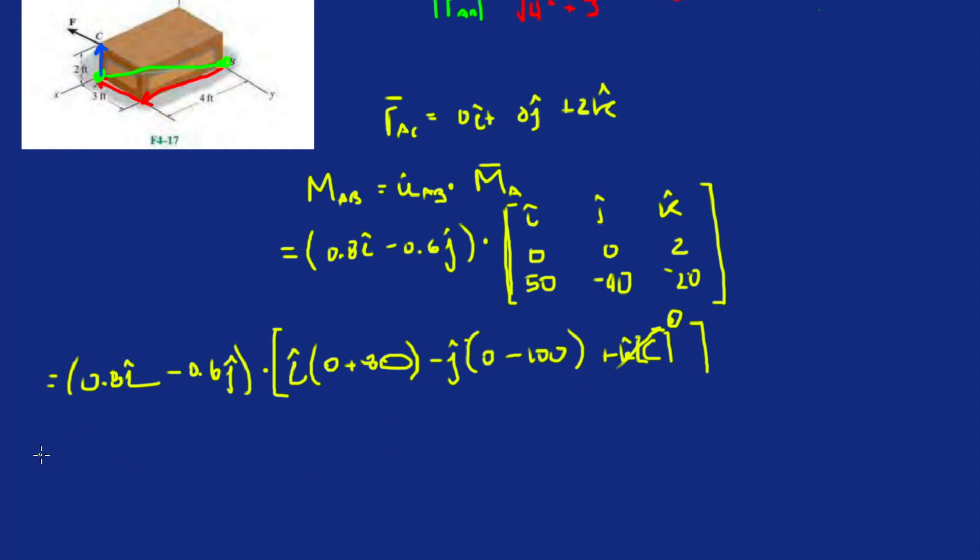Now let's do the dot product. It's going to be 0.8 times 80 (i dot i equals 1), and then minus 0.6 times 100 (j dot j equals 1).